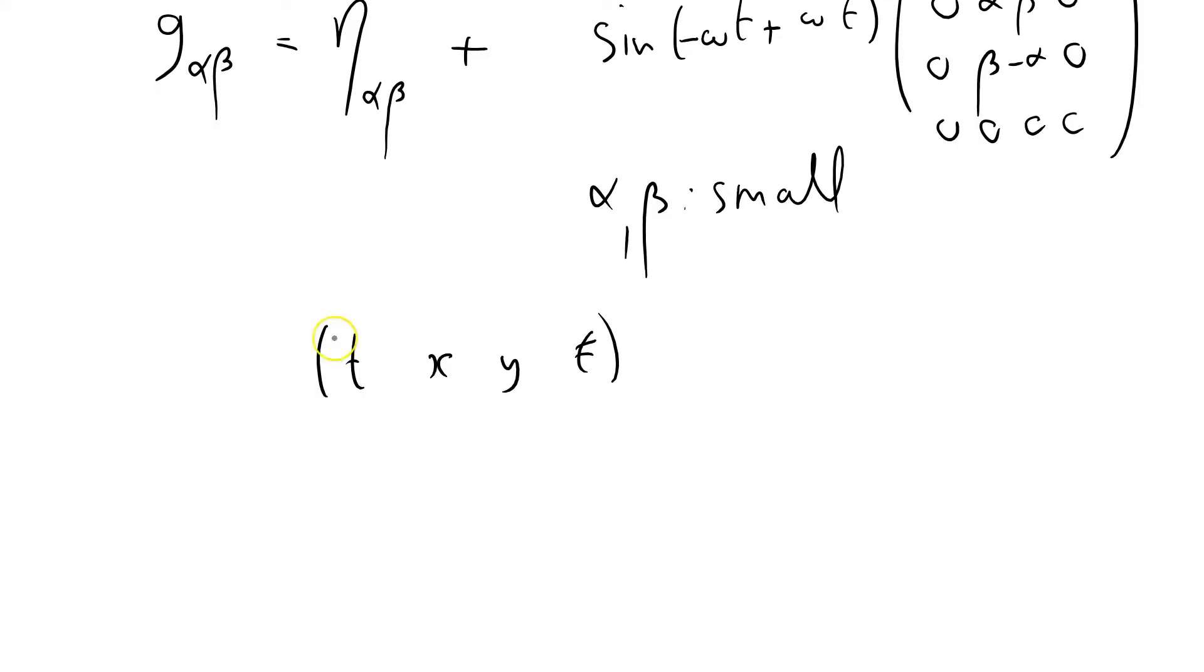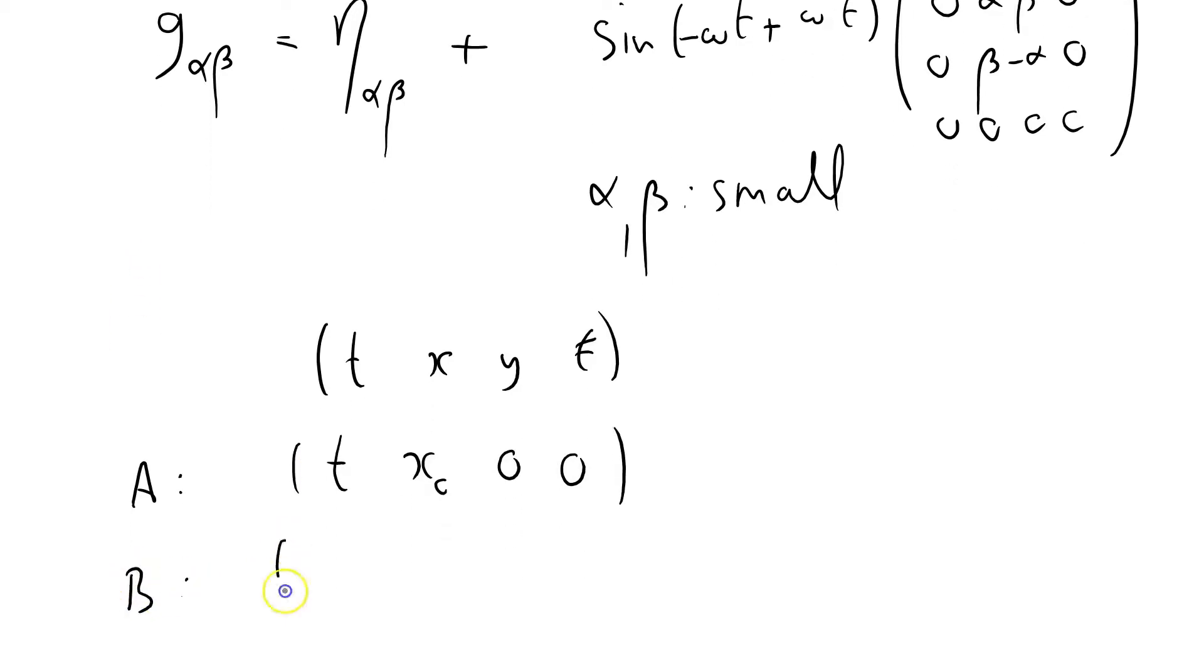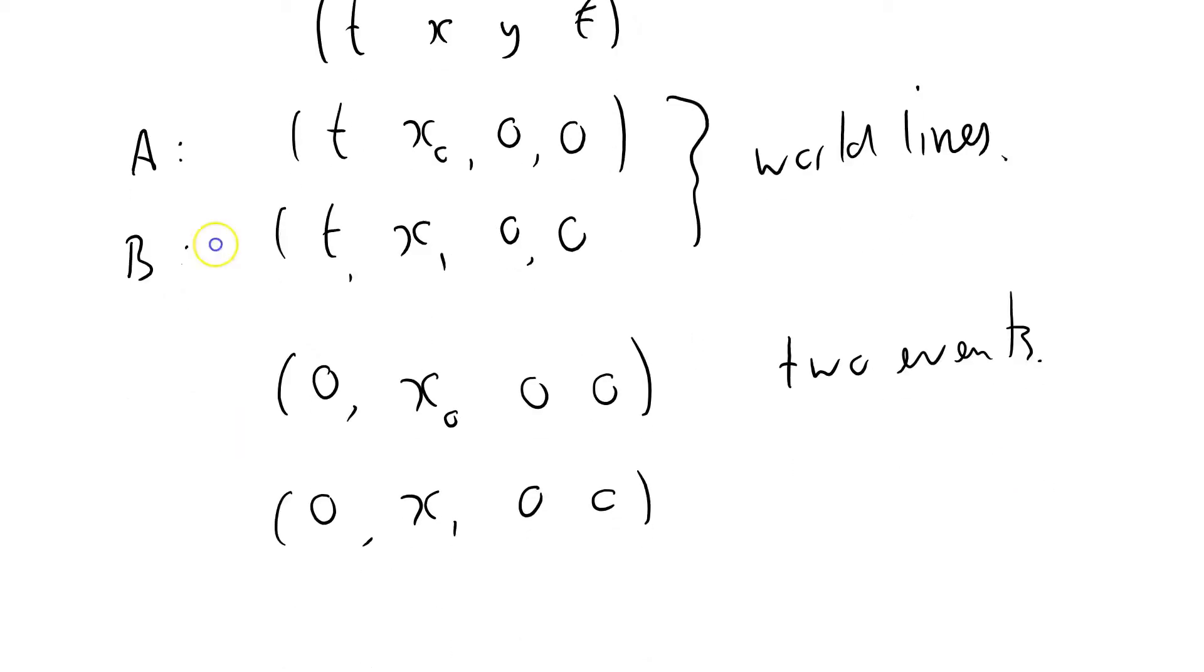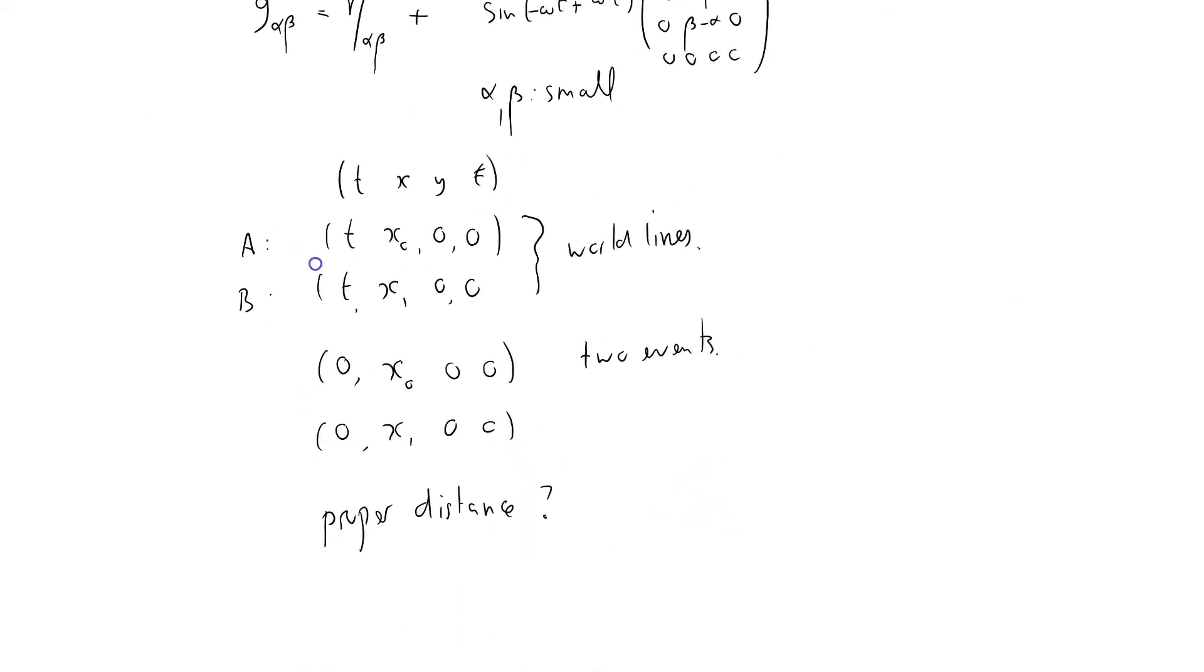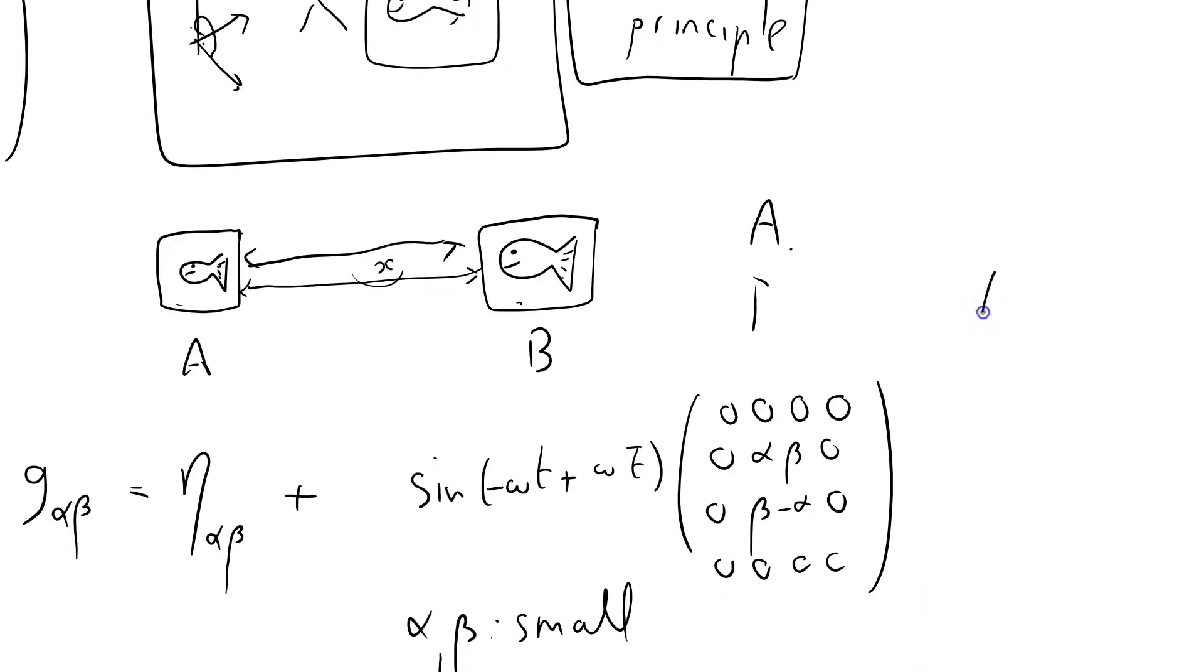So what I'm going to do is place these two fish tanks. The world line of fish tank A is going to be T, X naught, 0, 0. I'm arbitrarily setting the Y and Z coordinates to 0. Fish tank B is going to be T, X one, 0, 0. Those are the world lines. I'm going to give both fish a clock and choose two events on their world lines: 0, X naught, 0, 0 and 0, X one, 0, 0.